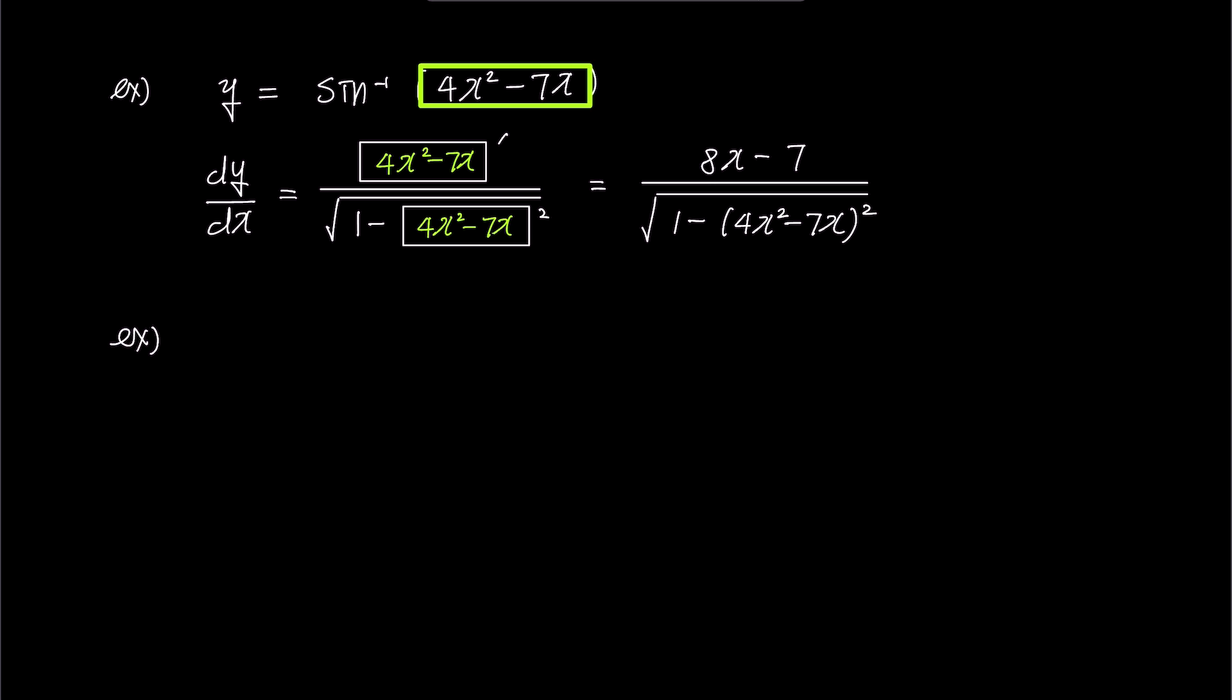Let's review the process we followed once more. The derivative of the inverse sine of box is box prime over square root 1 minus box squared.